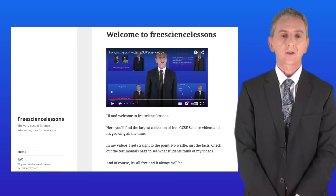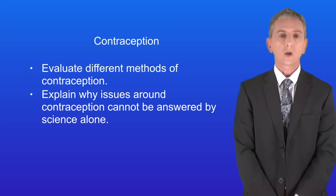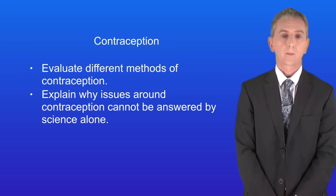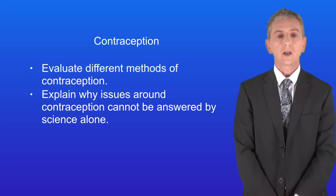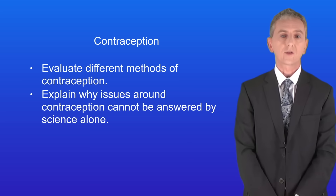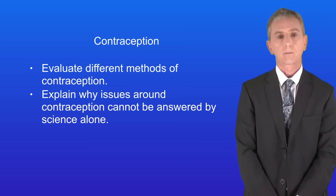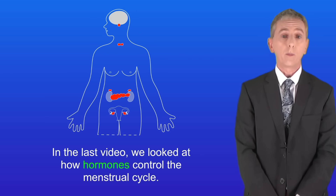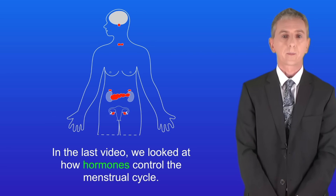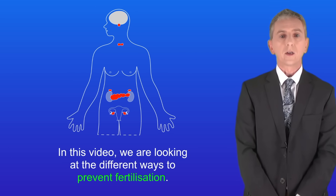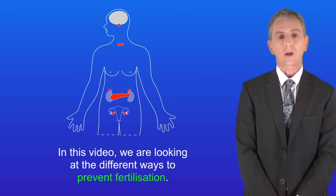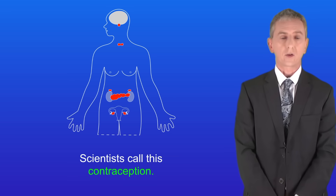Hi and welcome back to freesciencelessons.co.uk. By the end of this video you should be able to evaluate different methods of contraception, and explain why issues around contraception cannot be answered by science alone. In the last video we looked at how hormones control the menstrual cycle. In this video we're looking at the different ways to prevent fertilization — scientists call this contraception.